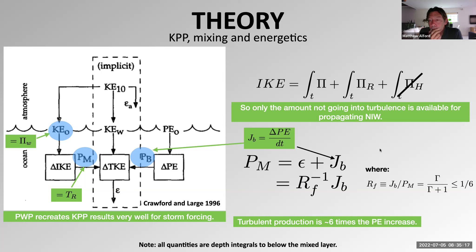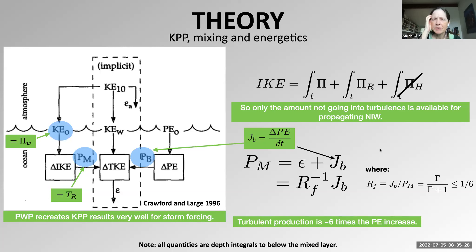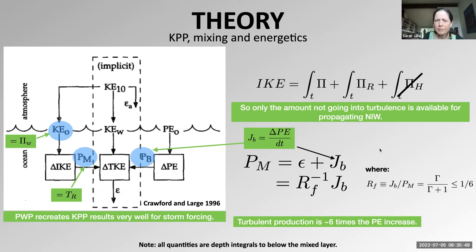Do you think the mixing at the base of the mixed layer follows the same scalings as the mixing everywhere else, or is that a very special region? It's very special. The convective part is qualitatively different from the shear-driven part. Alexis Kaminsky has actually been working on this problem well — she finds these little scouring instabilities and things like that. At the mixed layer base, it's quite likely that this is just generic shear-driven turbulence, but I'm wrong all the time.